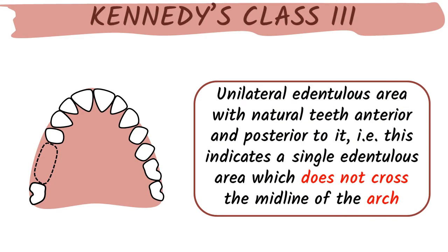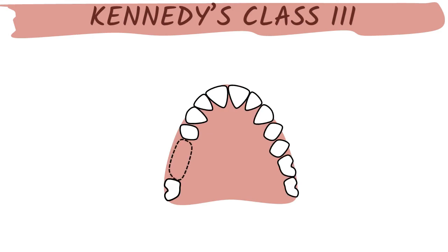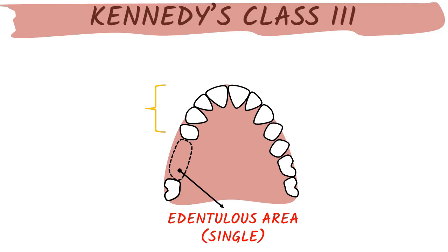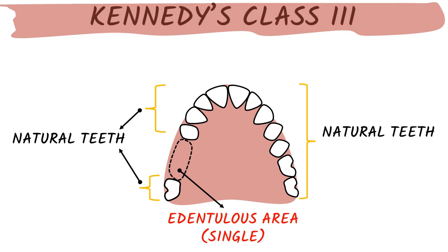Kennedy's Class 3 is a unilateral edentulous area with natural teeth both anterior and posterior to it. This indicates a single edentulous area which does not cross the midline of the arch — this is a very important point. As you can see in the figure, we have a single edentulous area bounded anteriorly and posteriorly by natural dentition. This is Kennedy Class 3.